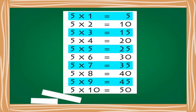Table of 5: 5 ones are 5. 5 twos are 10. 5 threes are 15. 5 fours are 20. 5 fives are 25. 5 sixes are 30. 5 sevens are 35. 5 eights are 40. 5 nines are 45. 5 tens are 50.